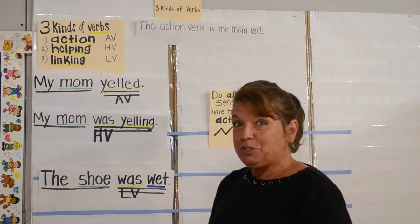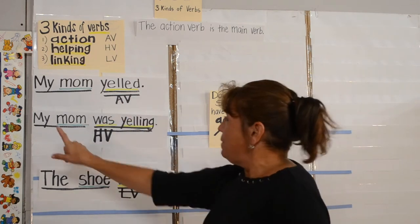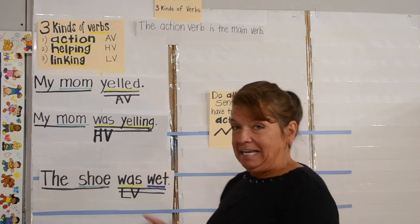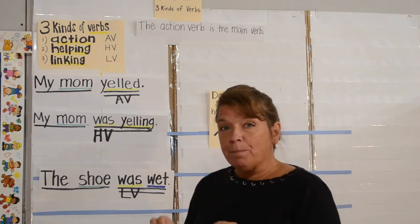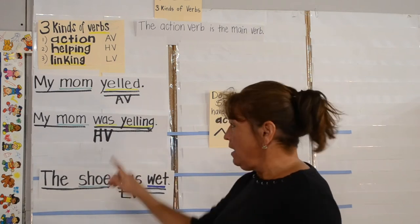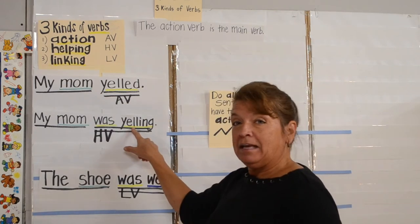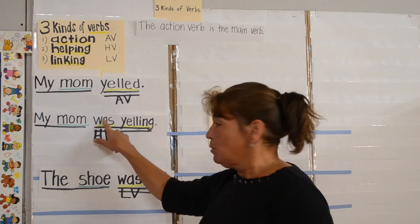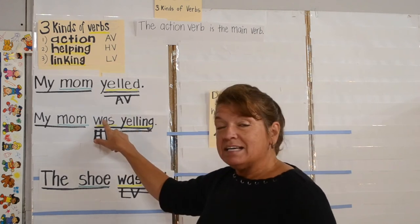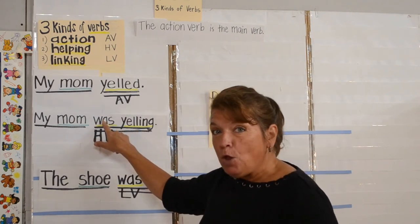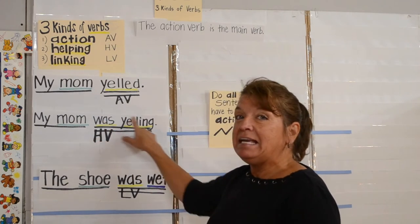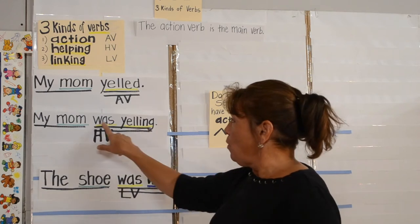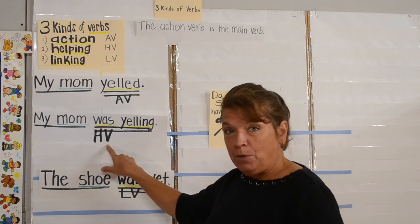Sentence number two: my mom was yelling. Your main verb here is yelling. What's happening is the verb was is helping yelling, so we call was a helping verb.